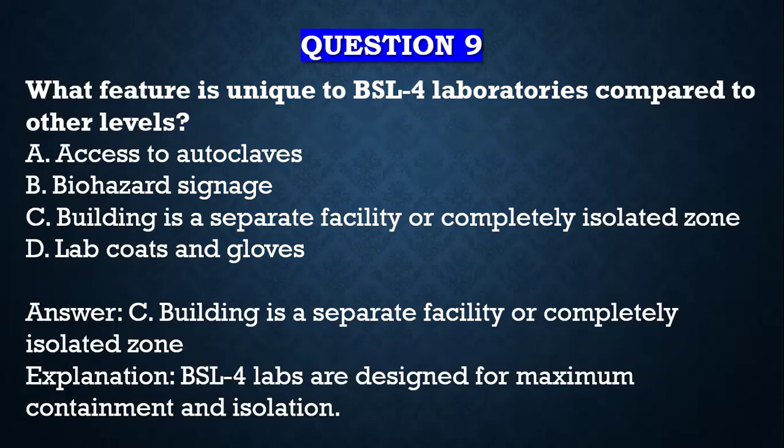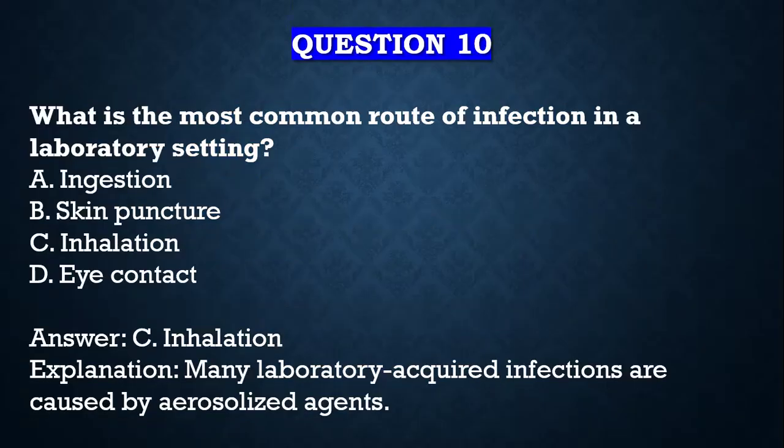Question number nine: what feature is unique to BSL4 laboratories compared to other levels? A) Access to autoclaves, B) Biohazard signage, C) Building is a separate facility or completely isolated zone, D) Lab coats and gloves. Your answer is C — the building must be a separate facility or completely isolated zone, because BSL4 labs are designed for maximum containment and isolation. Remember, the organisms at this level are very dangerous and most have no cure.